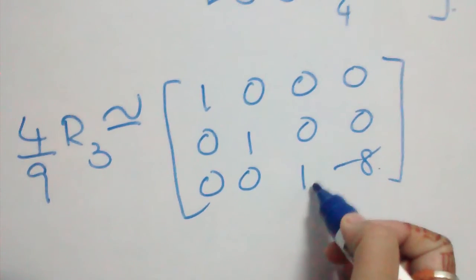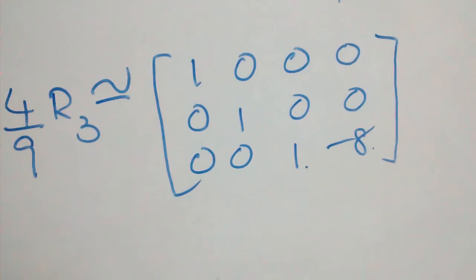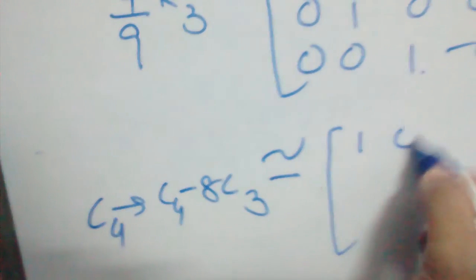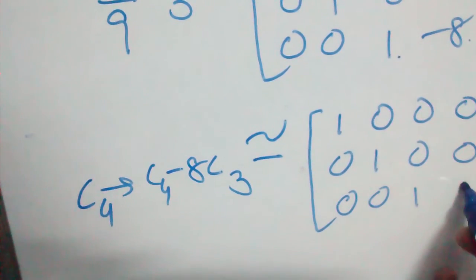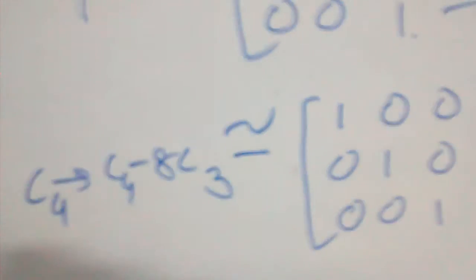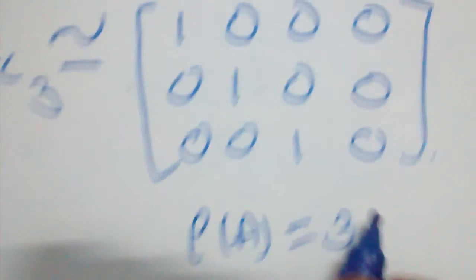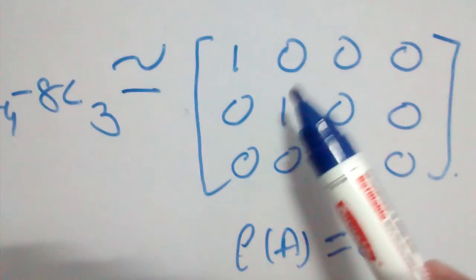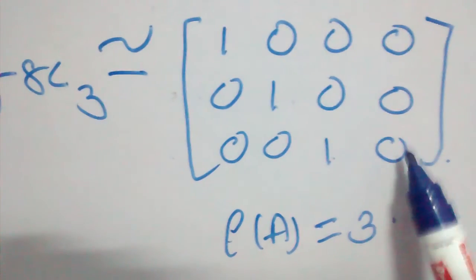Finally, make the last element in R3 zero using the column operation C4 → C4 - (-8)C3, i.e., C4 → C4 + 8C3. The final normal form is [1, 0, 0, 0; 0, 1, 0, 0; 0, 0, 1, 0]. The rank of the matrix is 3, because we have 3 non-zero rows: each row contains one non-zero element, making them all non-zero rows, so the rank equals 3.